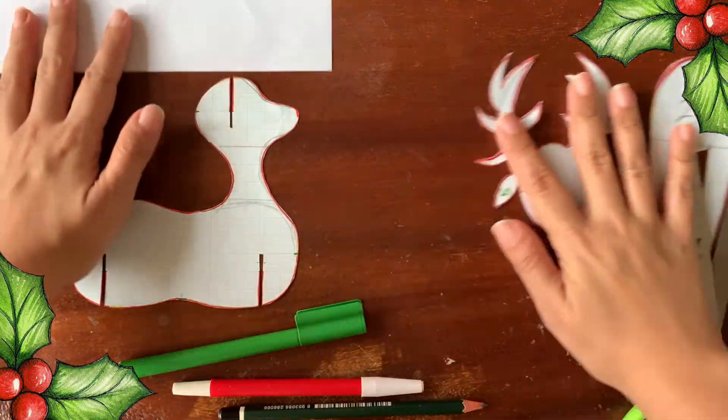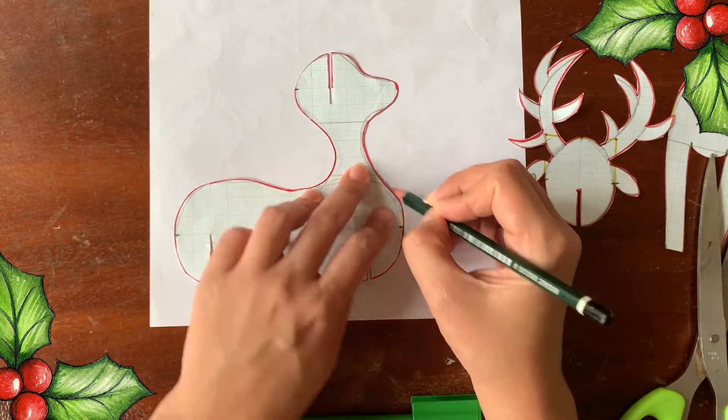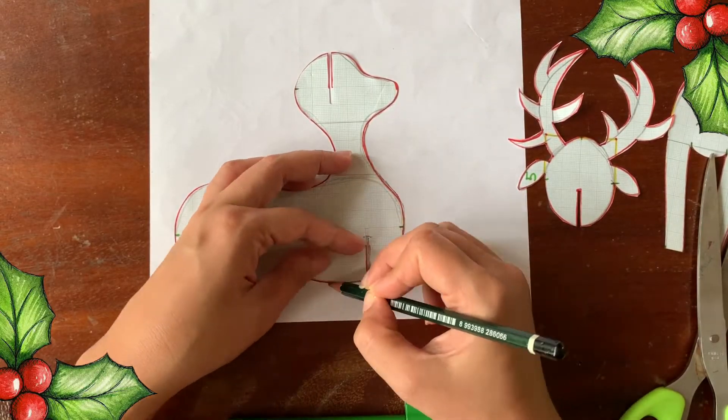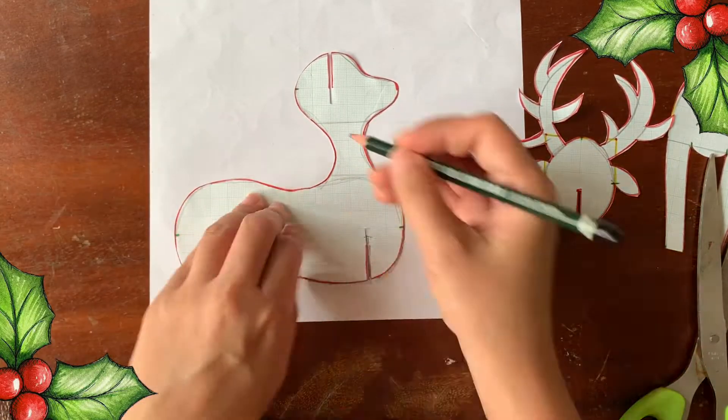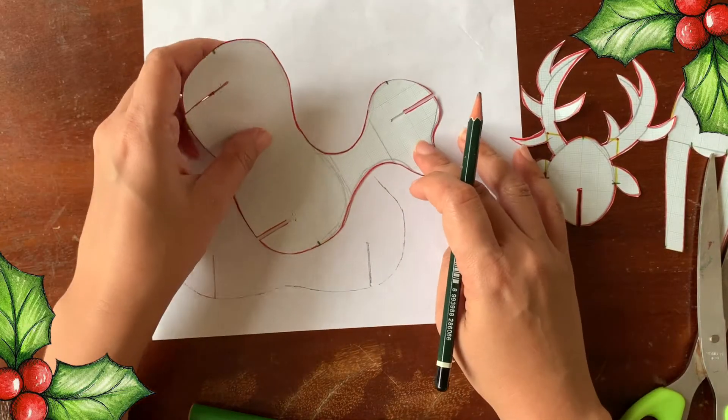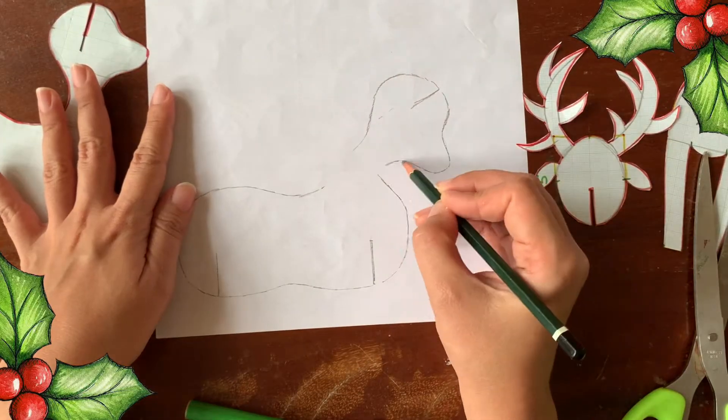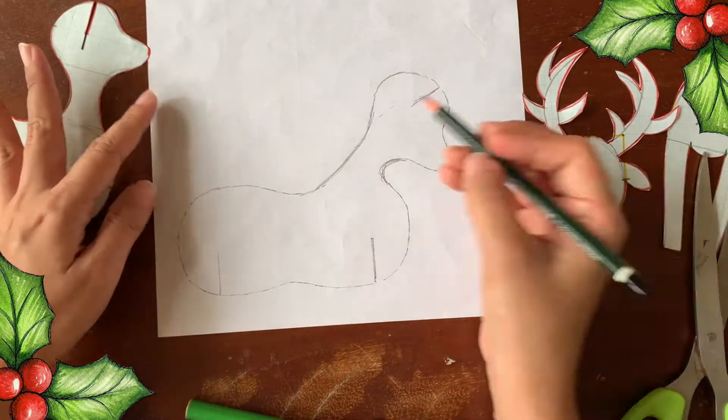But I'd like to make another reindeer with a different head position. So this is what I do. Trace the body first. And continue to draw the head with a different position like this. And then connect it to the body with the neck.